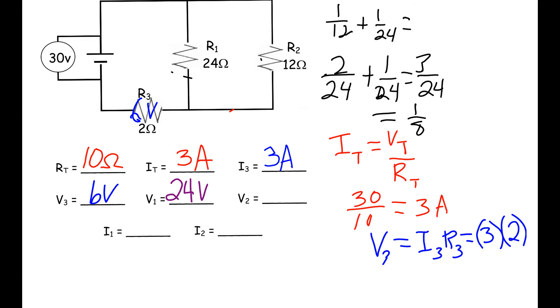And because our V1 and our V2 are in parallel, we're going to say that they're the same voltage, because all resistors in parallel have the same voltage.